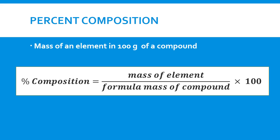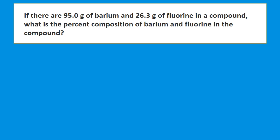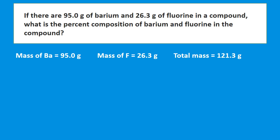When we think of percent composition in a compound, we think of the mass of the element divided by the formula mass of the compound. We need to know the mass of the element present and the formula mass — that is the mass of 1 mole of the compound. If there are 95.0 grams of barium and 26.3 grams of fluorine in a compound, the total mass is 121.3 grams.